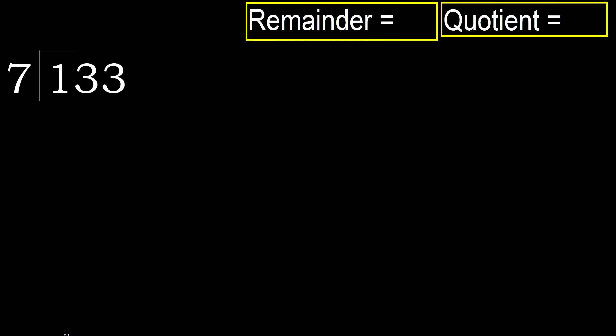133 divided by 7. 1 is less, therefore next. 13 is not less, therefore with 13. 7 multiplied by which number is nearest to 13 but not greater? 7 multiplied by 2 is 14.